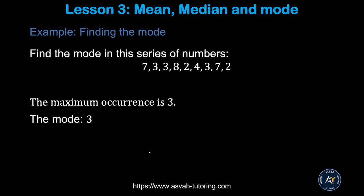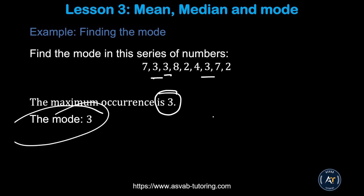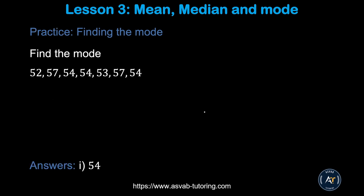The next thing is finding the mode. The mode is the number that occurs the most. So you look at which number comes up the most. It seems like 3 came the most, so 3 is the mode here. Make sure that you know this concept, because sometimes they ask this type of question in the officer candidate test. There is another practice problem for you to try by yourself — make sure the answer is 54.